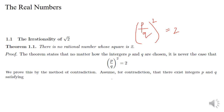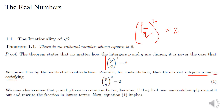We prove this by the method of contradiction. Method of contradiction means we will assume the opposite of what is required. Here, we require that we cannot find P and Q such that (P by Q)² equals 2. So we assume the opposite: that there exist integers P and Q satisfying (P by Q)² equals 2. We will mark this as equation number 1.